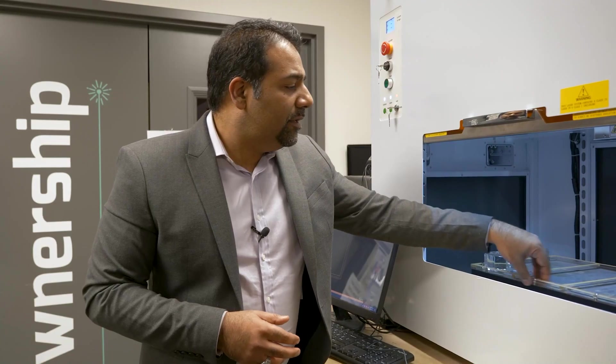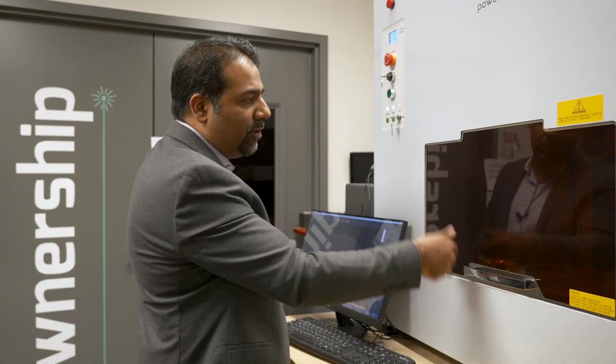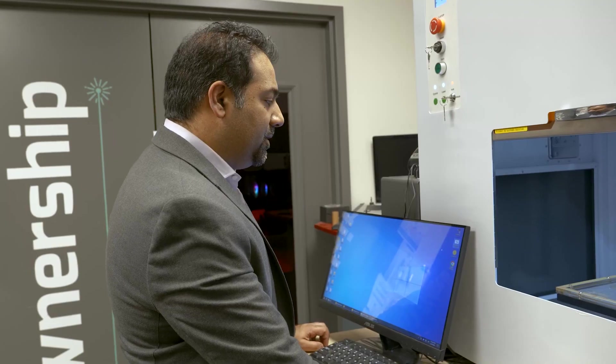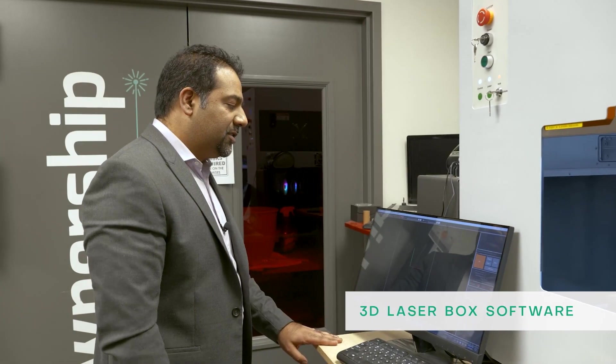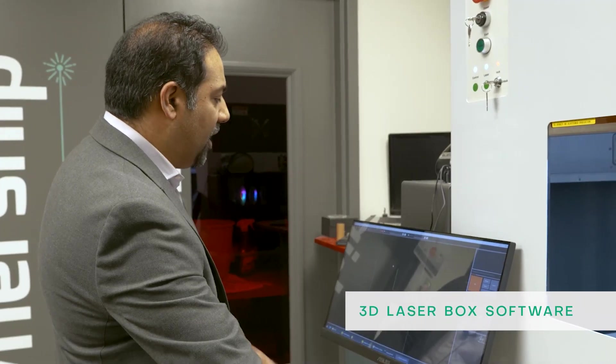Once you've loaded your glass, you simply close the door. The light inside will actually turn off. And you'll be able to see the laser striking if you have the upgraded door once the laser starts burning. Now we're going to talk about the software. You just simply double-click on it and it will launch the 3D Laserbox software. It's a fairly easy to use software.